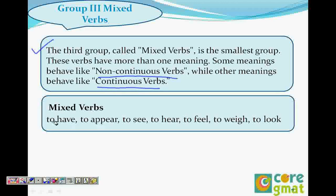So we have: to have, to appear, to see, to hear, to feel, to weigh, to look. These are the verbs that can behave as both non-continuous and continuous verbs. That means when you use them as continuous, they mean something, and when you use them as non-continuous, they mean something else. When you use them without -ing, the meaning is one thing, and when you use them with -ing, the meaning is something else.